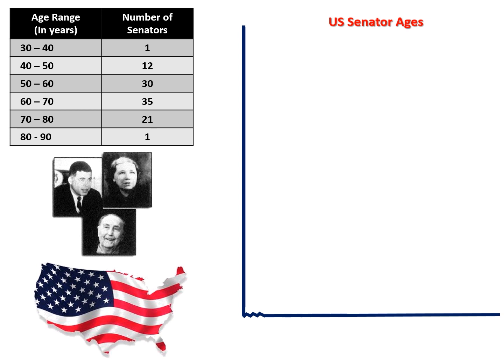For the X axis, we are going to record the age in years — always include the unit. On the Y axis, we're going to record the number of senators. The interval for the X axis is not going to start at zero; it's going to start at 30.